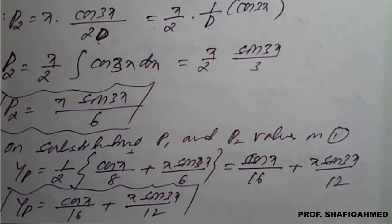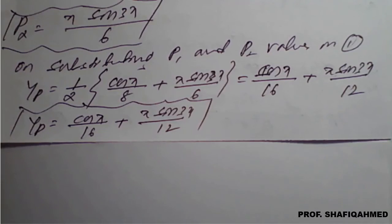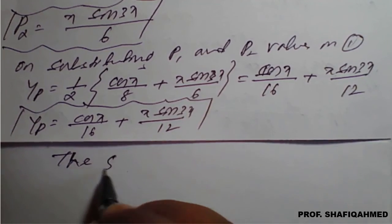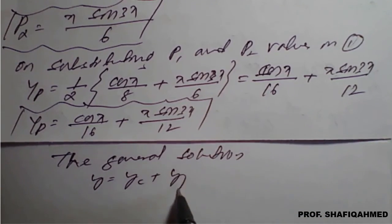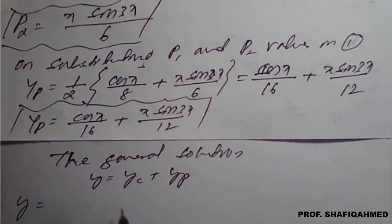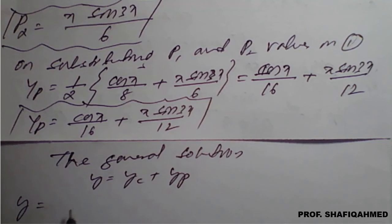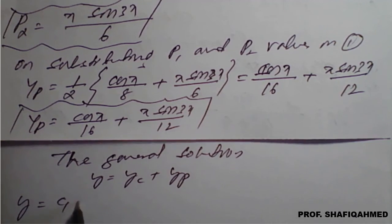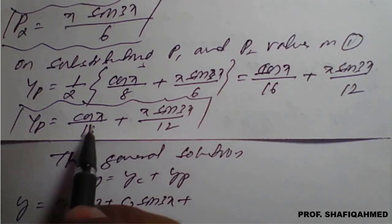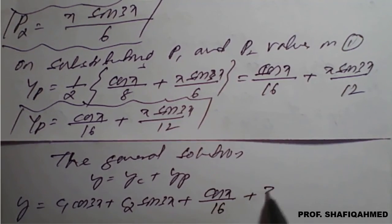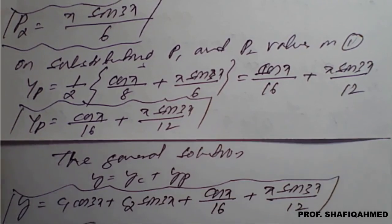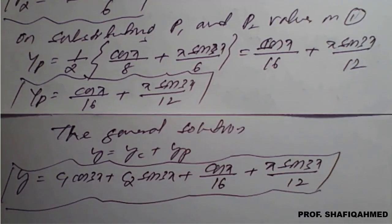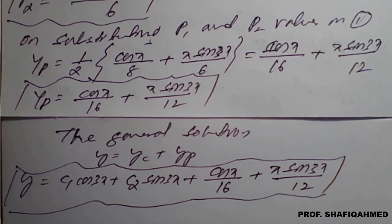Now we write the general solution: y = yc + yp. Therefore, y = c1·cos(3x) + c2·sin(3x) + cos(x)/16 + x·sin(3x)/12. This is the required general solution of the given non-homogeneous differential equation using type 2.